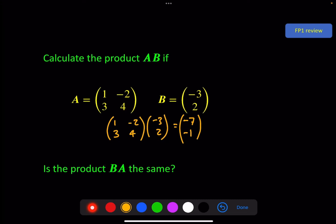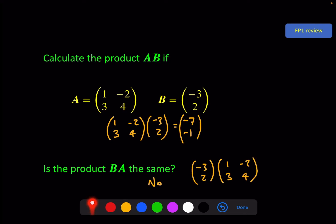Is the product B times A the same? The answer is no. In this case it's very easy to see, because if we try and do it the other way around, we can't even do this. We won't get an answer because we don't have the number of columns equaling the number of rows. We've got two rows but only one column, so when you try and do minus 3 times 1, you don't have another element to multiply by 3. So this is undefined.